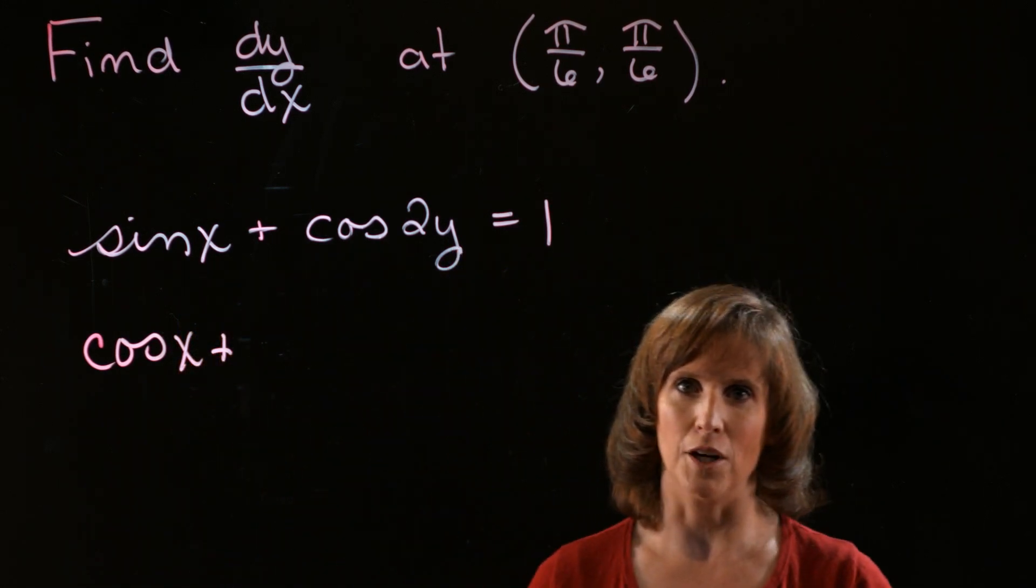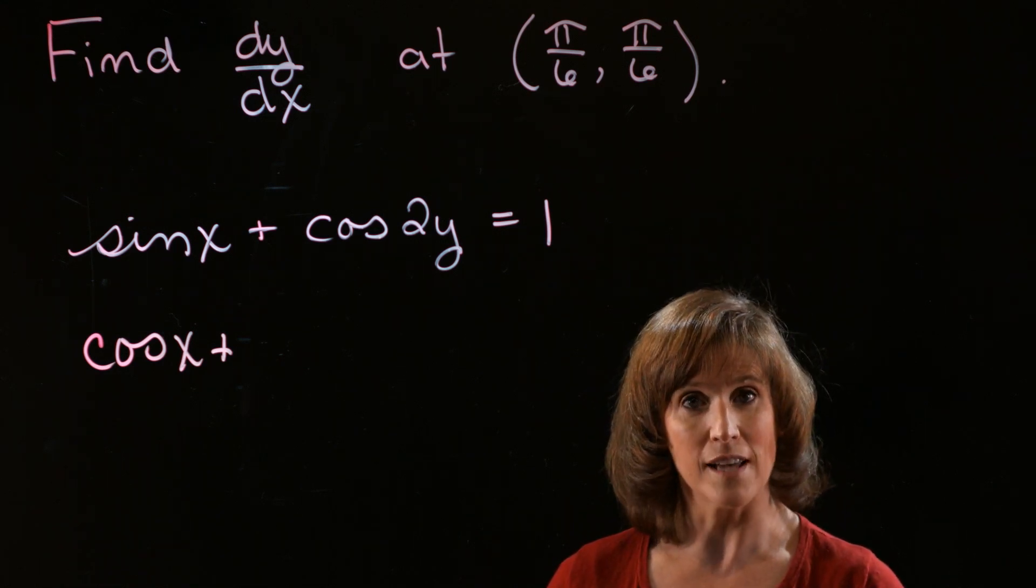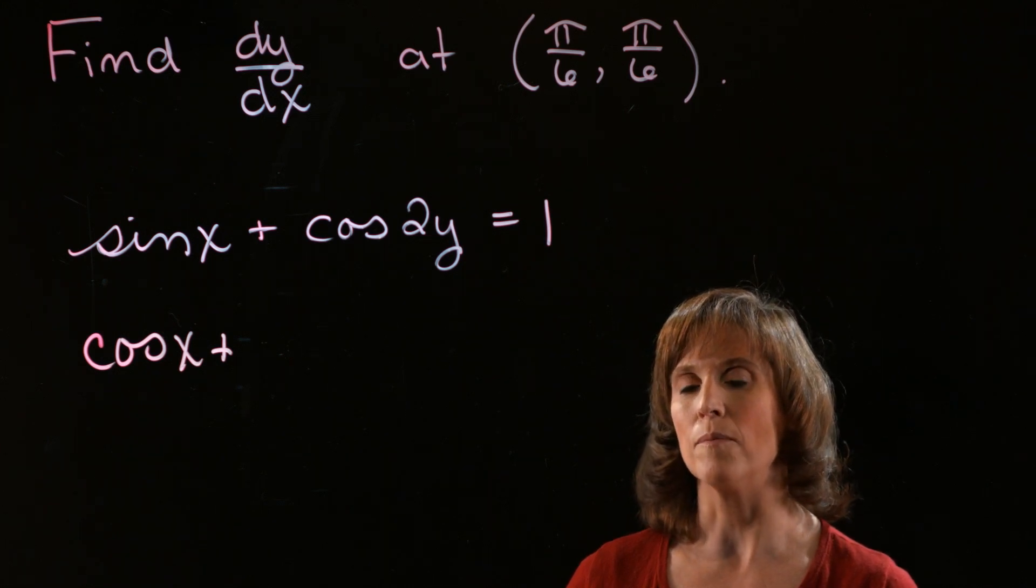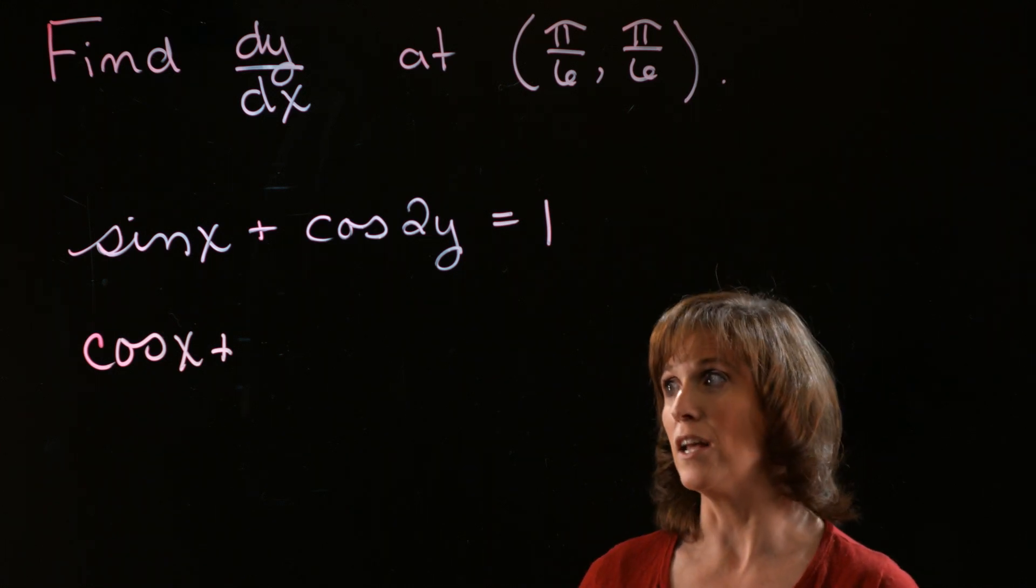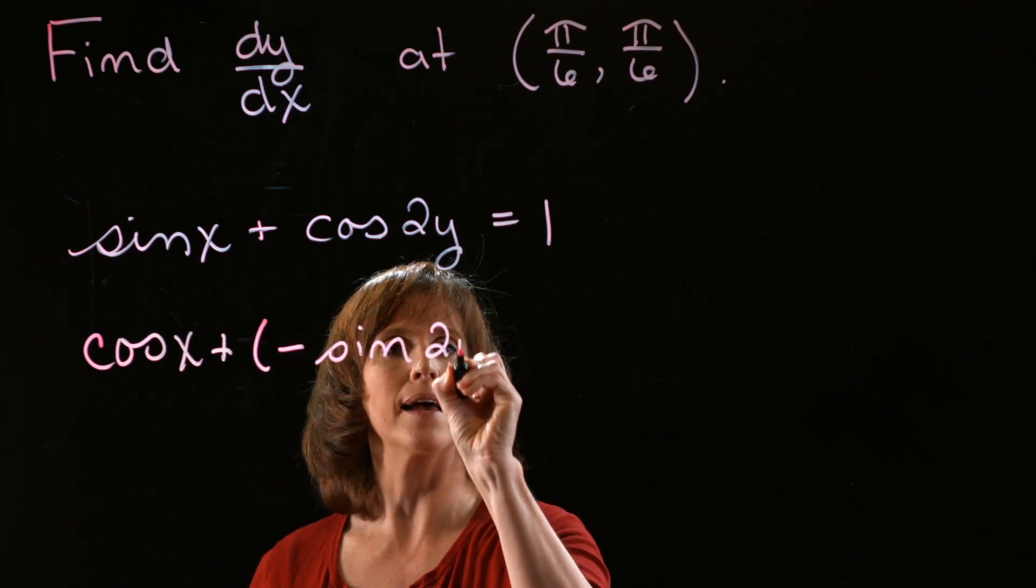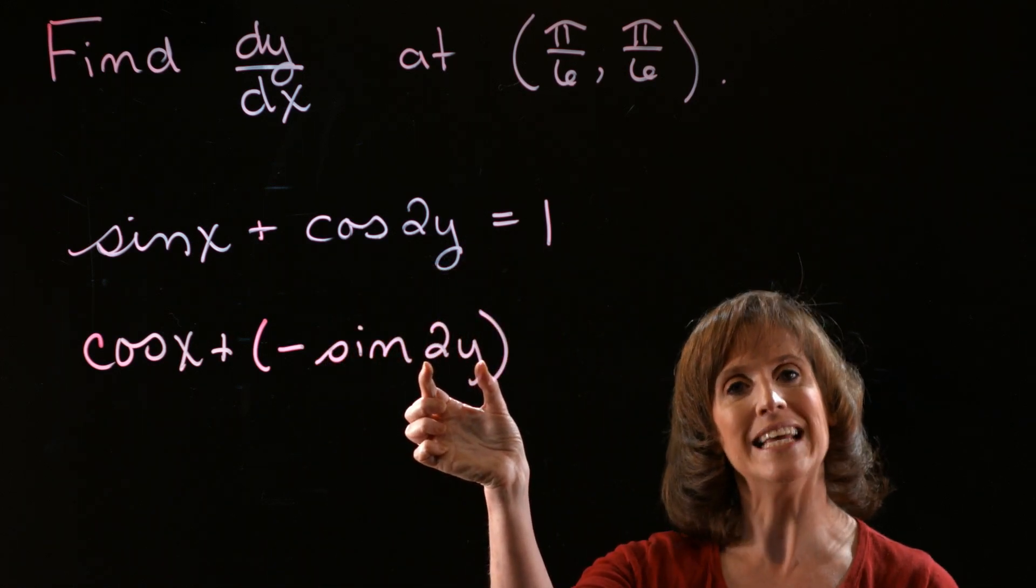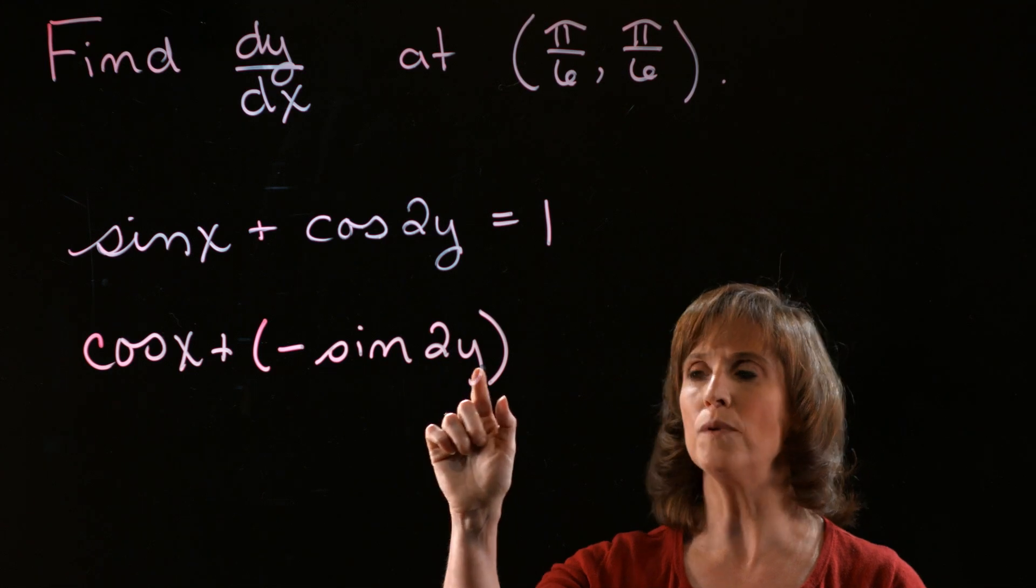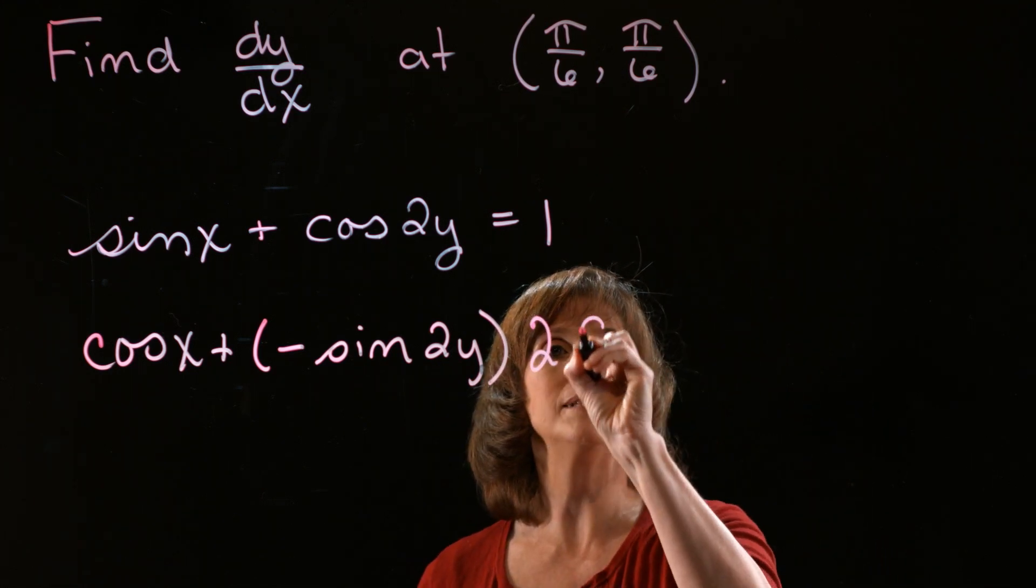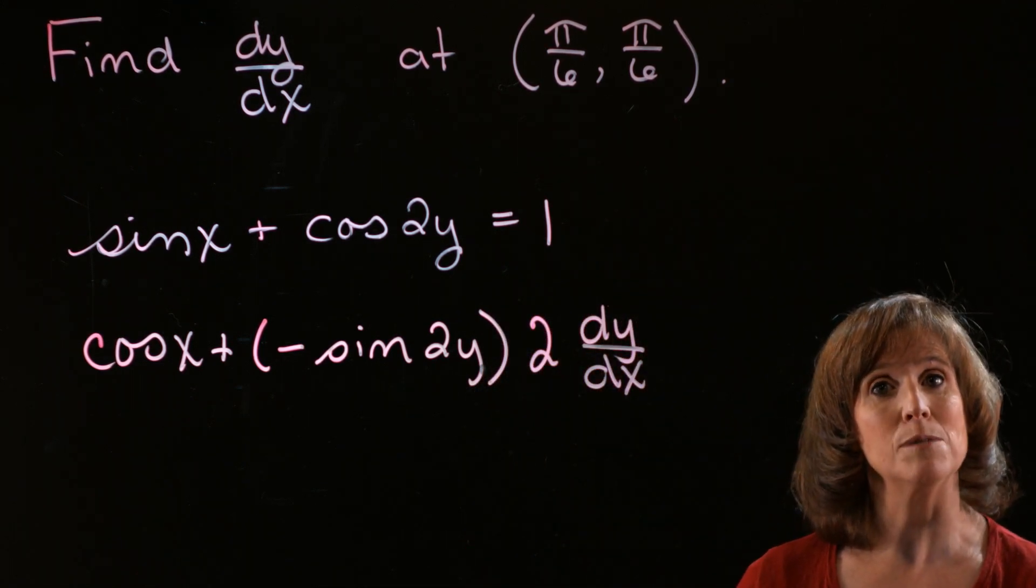The second term is a little trickier. It's a composite function. I'm composing 2y with the cosine function. Well, the main operation is cosine. So I'm going to begin there. The derivative of cosine is minus sine. So I'm going to have minus sine of 2y. But now I have to take the derivative of the inside piece of that composite function. And the derivative of 2y is going to be 2 times dy/dx. Because remember, I'm differentiating with respect to x.